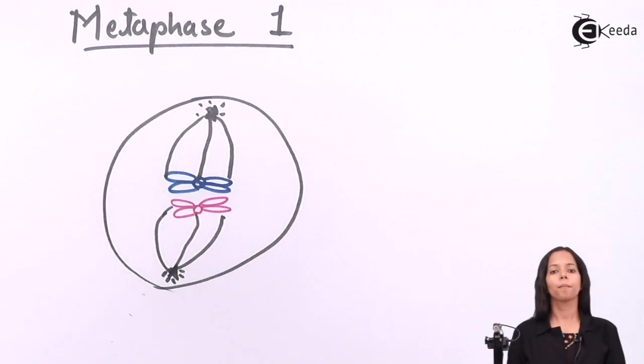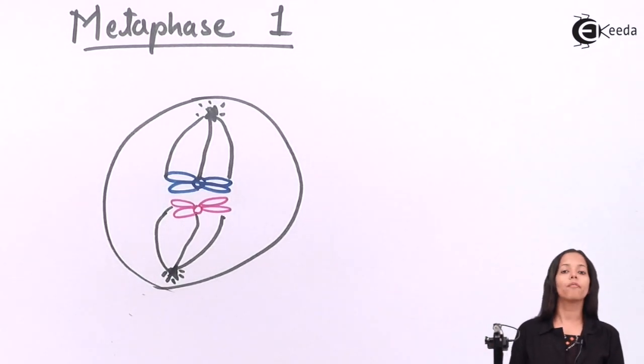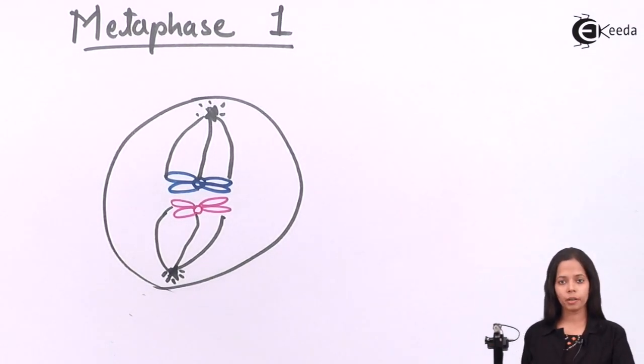In metaphase 1, you can see the spindle fibers are arising from the centriole to the chromosome. Both sides and the centriole are trying to hold one chromosome. The same goes for the other centriole as well.